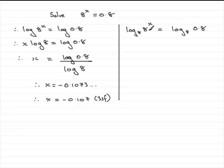Again we would use the power rule. The power x here can come out the front of the log. So you therefore have x log in base 8 of 8 equals the log in base 8 of 0.8.